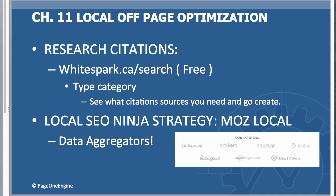For a local SEO ninja strategy I use on all my web assets — Moz Local. For about $85 a year per asset, you can get your website listed in the top data aggregators. These aggregators cost so much money to get into individually, so at $85 it's a real deal. What these data aggregators do is syndicate your website onto paid websites that have high authority for citations — it's a win-win. Check out moz.com/local and sign up.